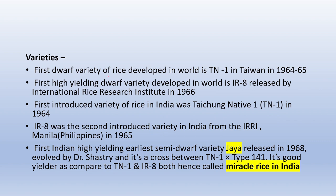Regarding rice varieties: the first dwarf variety of rice developed in the world is TN1 (Taichung Native 1), developed in 1964–65. The first high-yielding dwarf variety developed in the world is IR8, released by the International Rice Research Institute in 1966. IR8 was the second introduced variety in India from IRRI, developed in Philippines in 1965. The first Indian high-yielding semi-dwarf variety was Jaya, released in 1968, evolved by Dr. Shastri, a cross between TN1 and Type 141. It is called miracle rice in India.